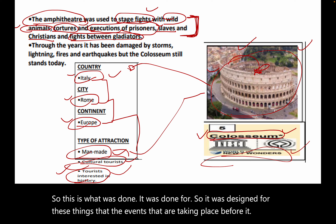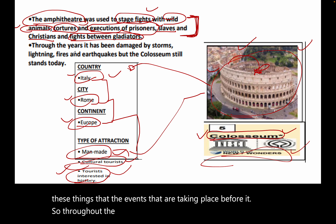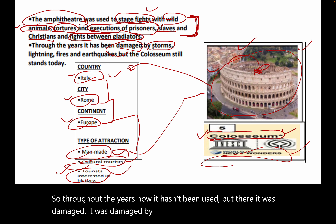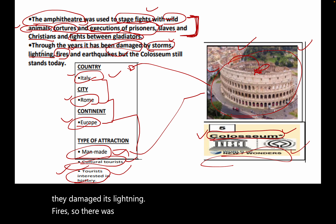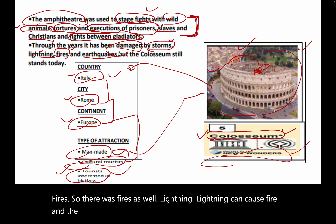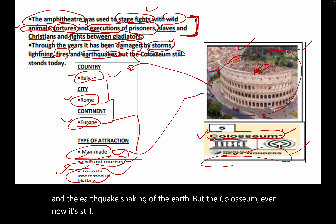Over the years the Colosseum fell out of use and was damaged. It was damaged by storms, lightning-caused fires, and earthquakes. Despite this, the Colosseum still stands today in terms of its architectural design — it was built very strongly.